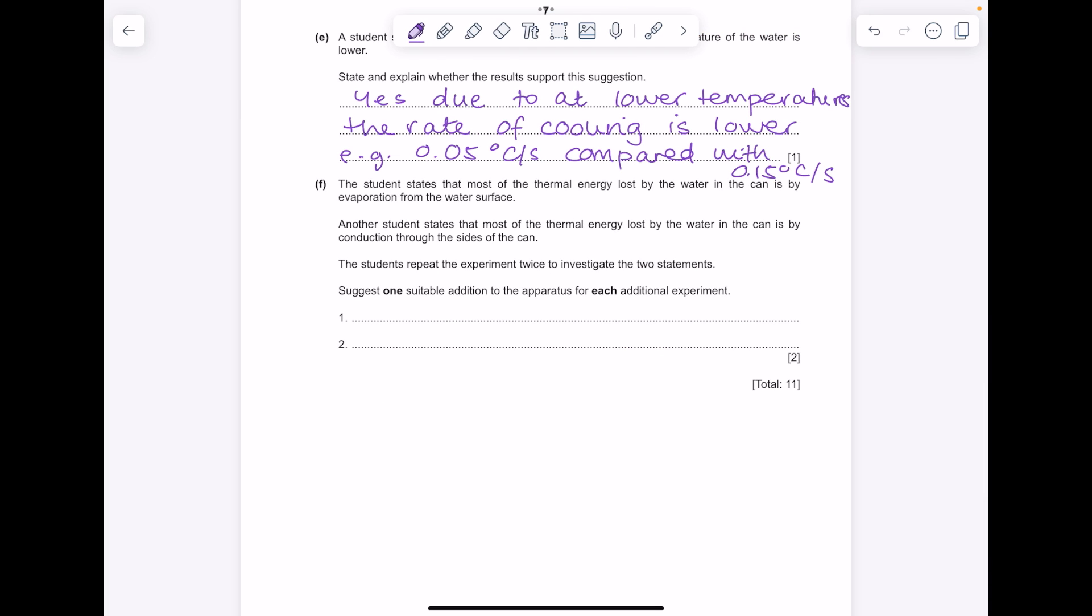The student states that most of the thermal energy lost by the water in the can is by evaporation from the water surface. Another student states that most of the thermal energy lost by the water in the can is by conduction through the sides of the can. The students repeat the experiment twice to investigate the two statements. Suggest one suitable addition to the apparatus for each additional experiment. So in order to consider evaporation from the water surface what we could do is we could add a lid. And then if we consider thermal energy being lost by conduction through the sides of the can we want to add insulation.